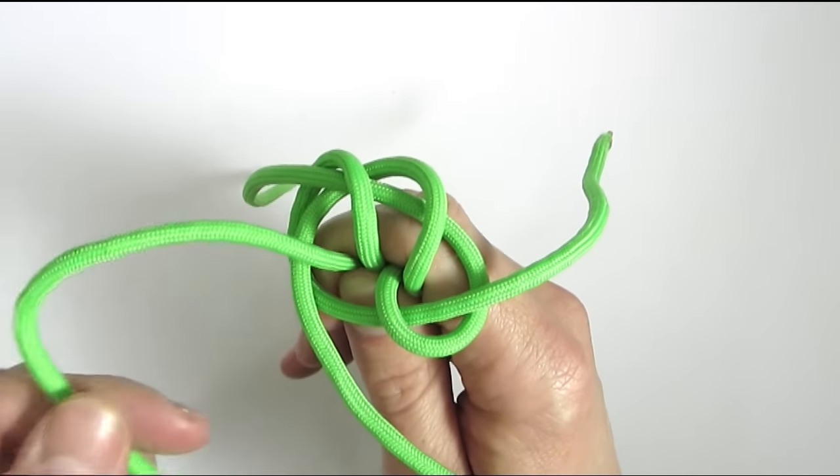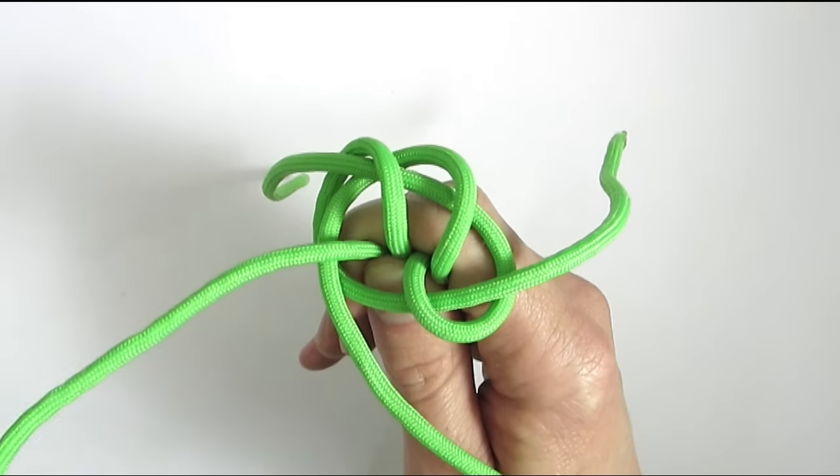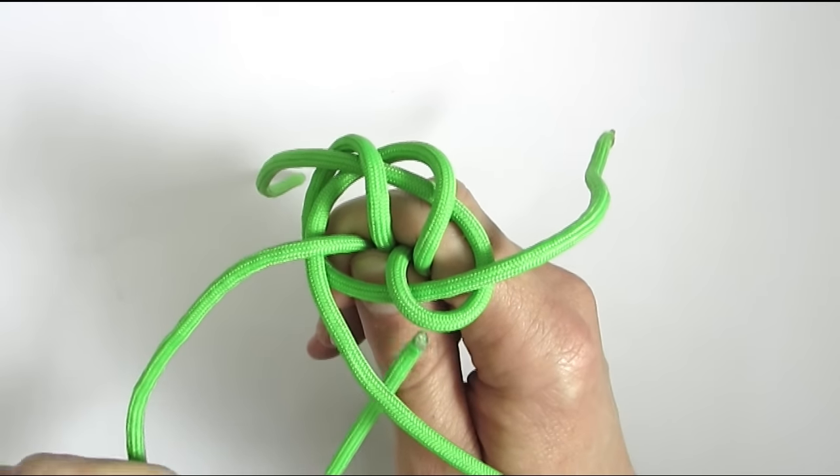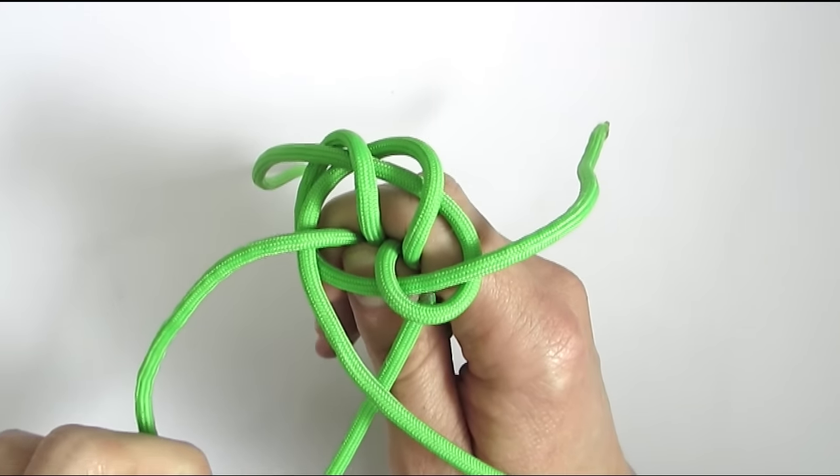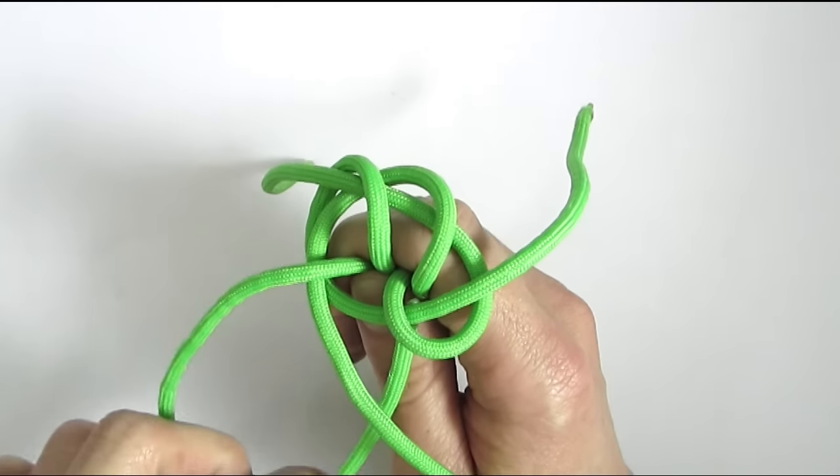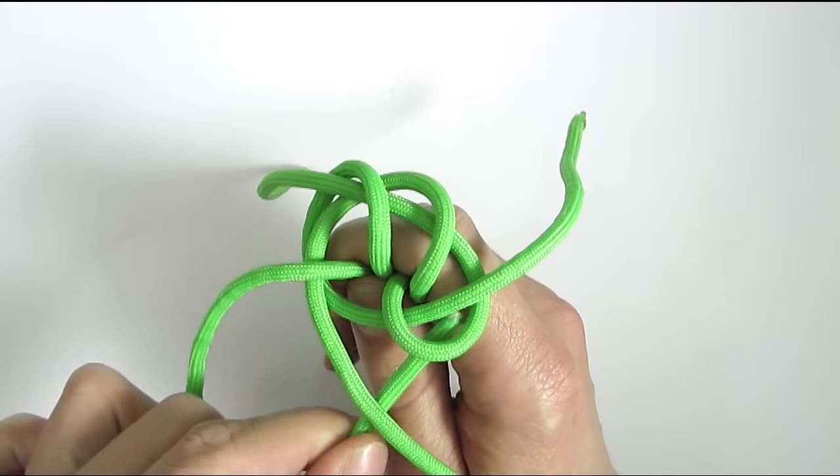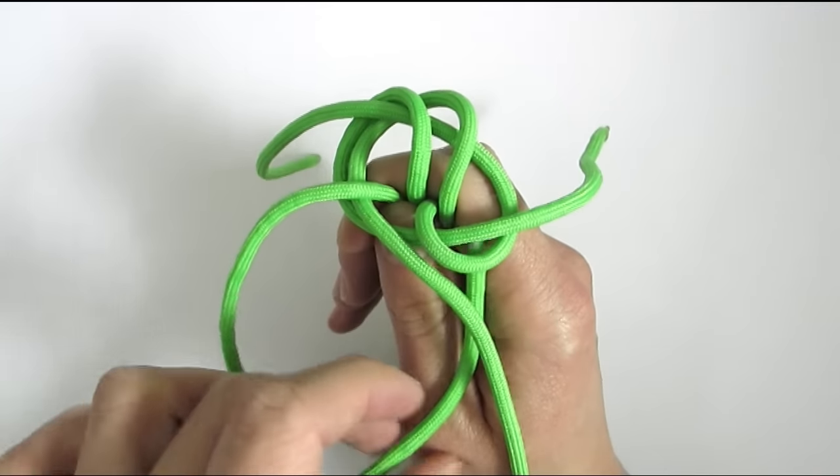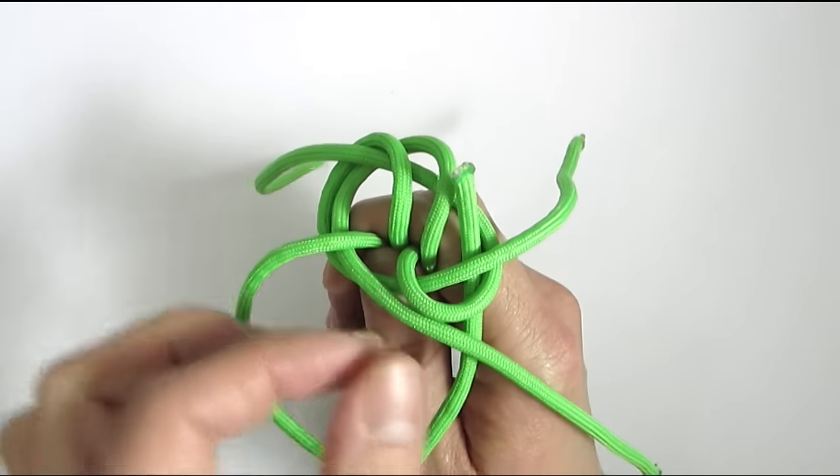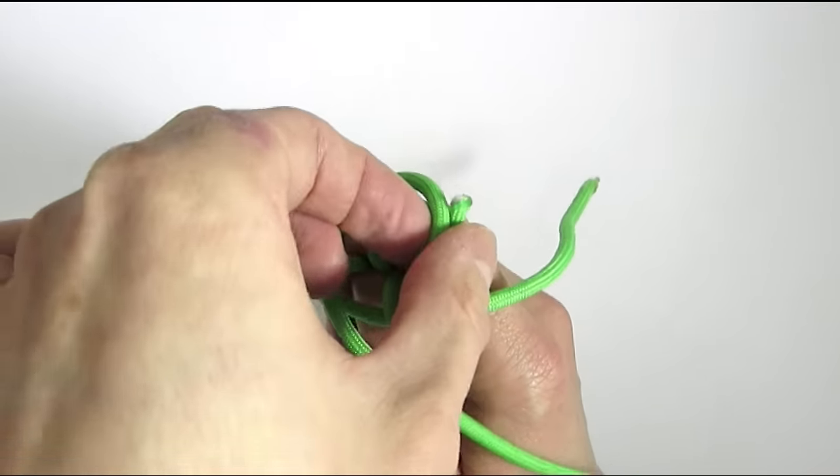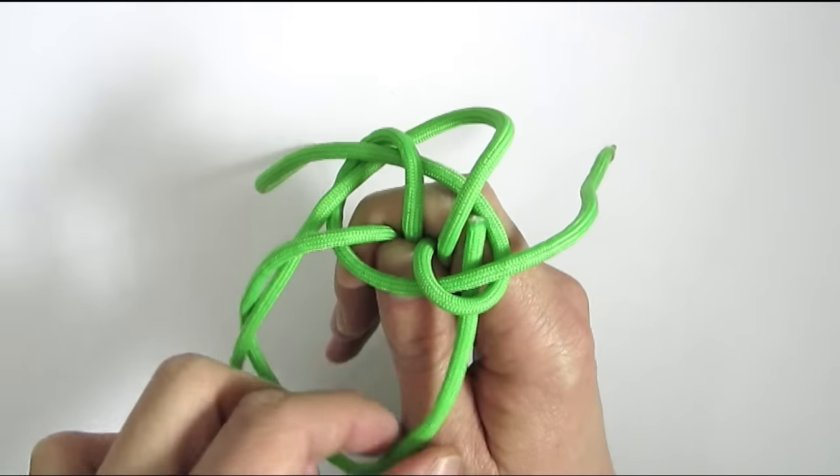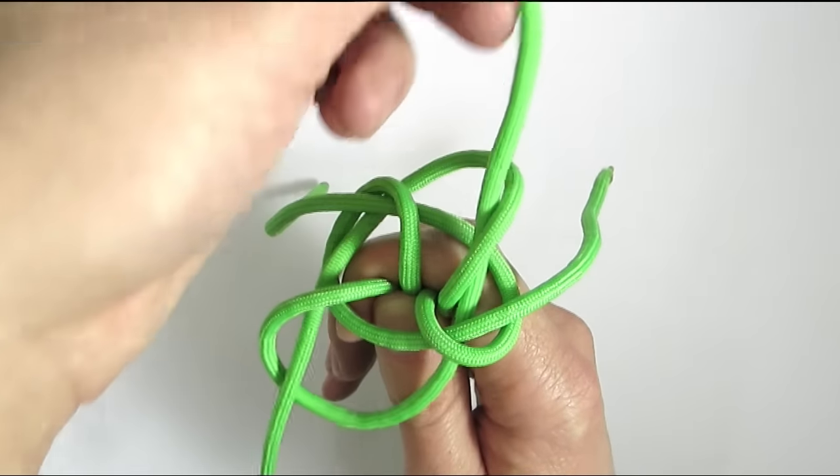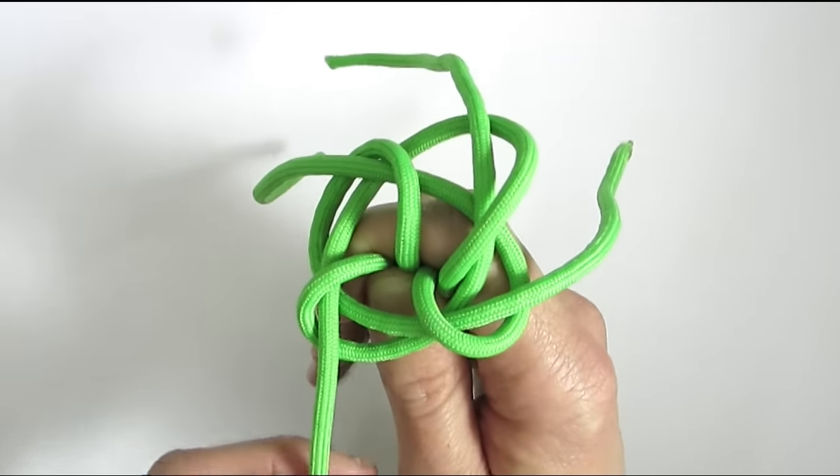Finally, take your left cord, go under this first cord and under and through the first loop. And this completes our single Matthew Walker knot.